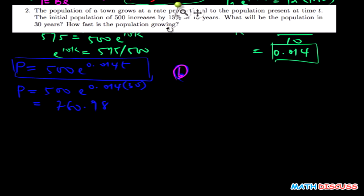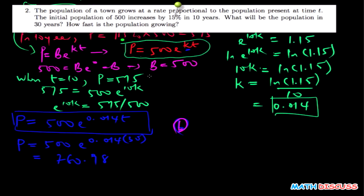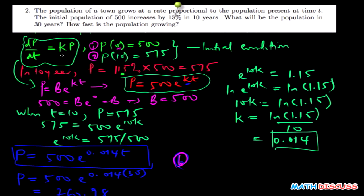How fast is the population growing? Not at just any time — the question says: what will the population be in 30 years, and then how fast is the population growing at that time? The rate at which the population is growing is instantaneous. The rate in 10 years will be different from the rate in 15 or 20 years. The rate is actually dependent on the size of the population. This is the differential equation we use to find the instantaneous rate of change.